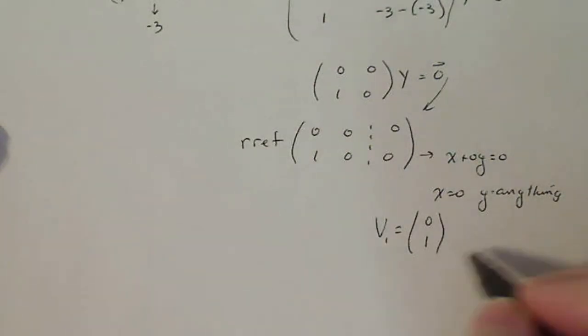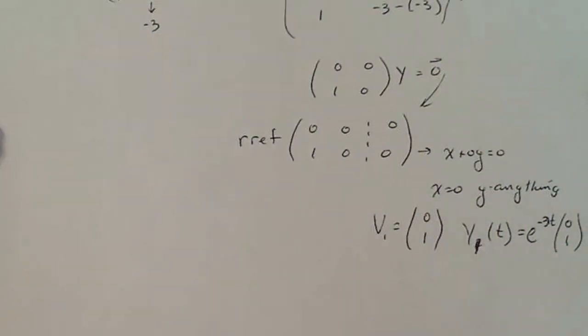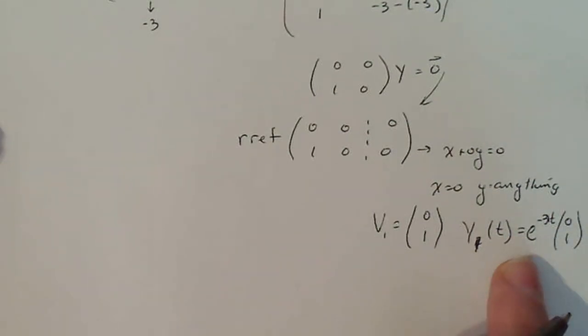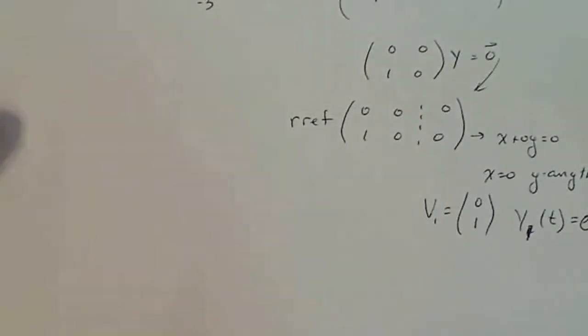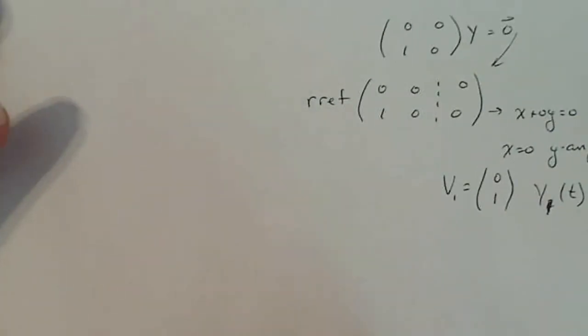Now, because we have a double root, we have to still work a little bit harder to get the other part of the linearity principle. So right now I have y1 of t is equal to e to the minus 3t times (0,1), and the linearity principle requires us to have y2, a second linearly independent solution to our system. Because we have the single root, it's just a little different than having other kinds of roots.